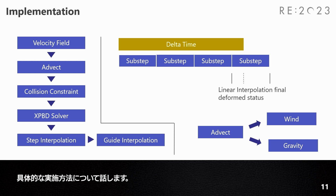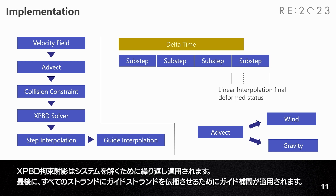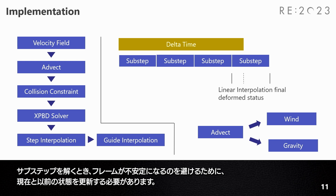Let me talk about the concrete implementation. Like other PBD methods, first, external forces are applied through advect steps, including air drag force and gravity. Collision is solved after that through strand vertices. XPBD constraints projection is iteratively applied to solve the system. Finally, guide interpolation is applied for propagating guiding strands to all strands. Every frame is then separated into sub-steps. It needs to be noted that when solving sub-steps, the current and previous status need to be updated to avoid frame instability through simulation.